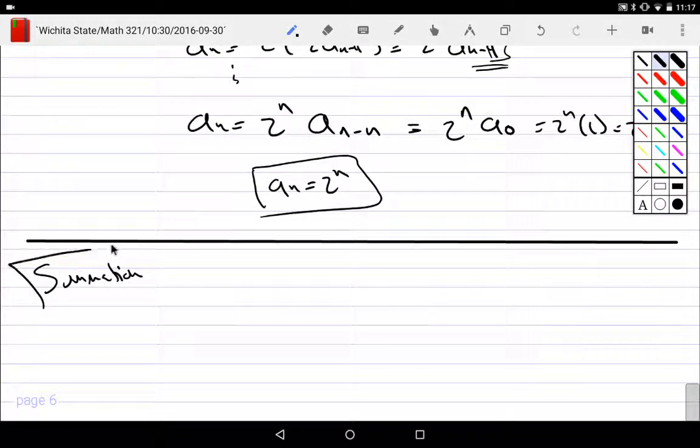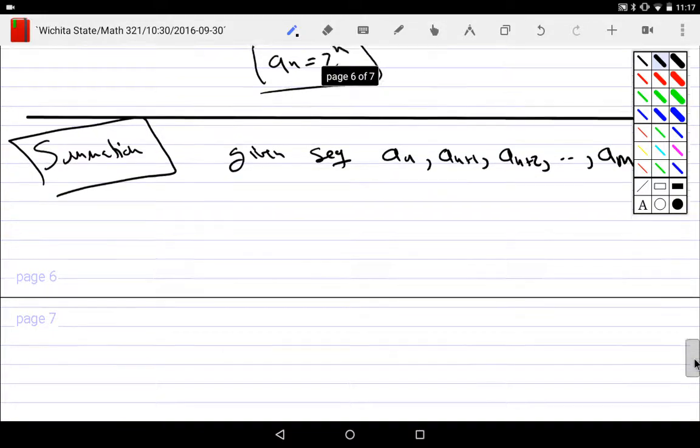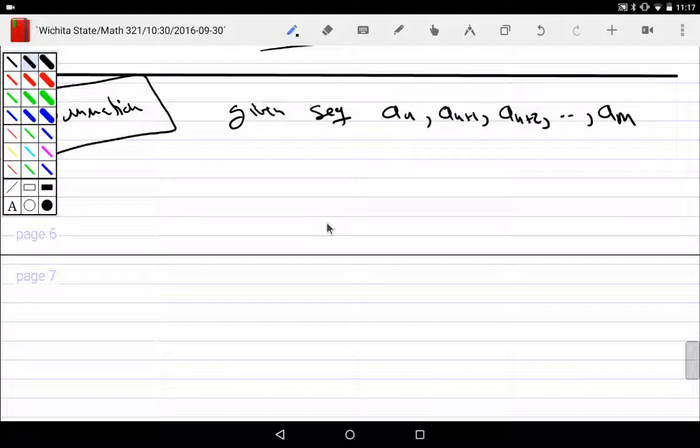What's a summation? Summation is if I was given the sequence, say a_n, and then a_(n+1), and then a_(n+2), and it all goes up all the way to a_m. I'm given my sequence that starts at a particular value and ends at a particular value.